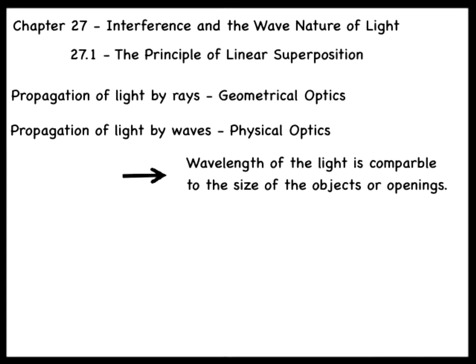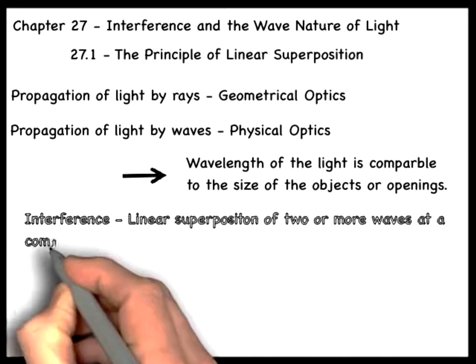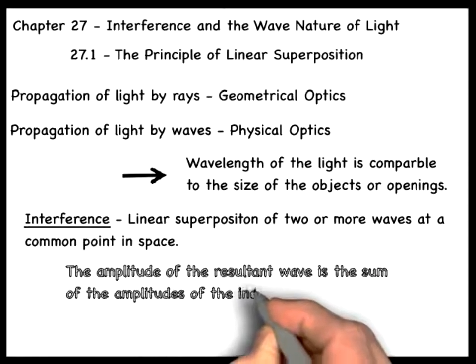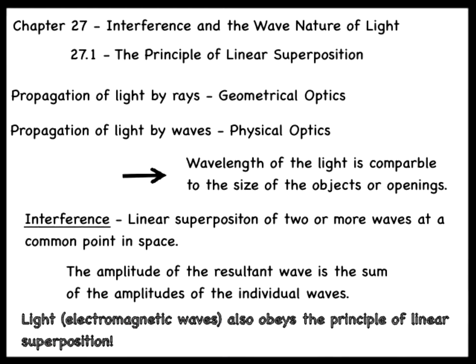To begin, we recall the wave phenomenon of interference, which results from the linear superposition of two or more waves present simultaneously at the same place in space. The amplitude of the resultant wave is the sum of the amplitudes of the individual waves. Light, and thus electromagnetic waves, obeys the principle of linear superposition.